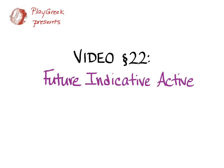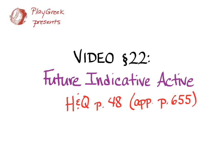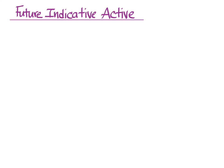This video goes with section 22 of Hanson and Quinn's Greek Intensive course and covers the future indicative active of thematic verbs that end in omega. You can refer to Hanson and Quinn page 48 for their coverage of the material in this video, and the appendix has it on page 655. The future indicative active is future time and simple or continuous aspect, and to form it we need Principle Part 2 and endings.